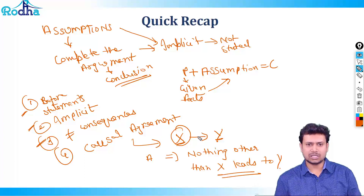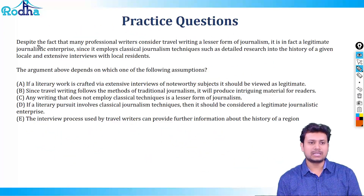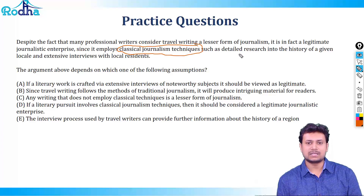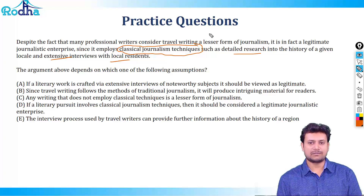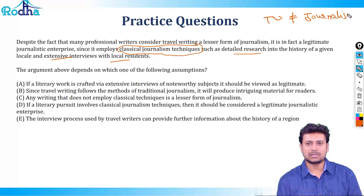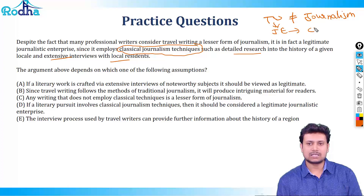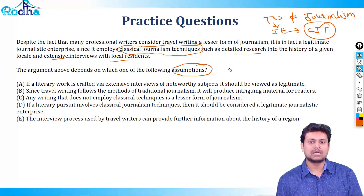Let's go to the questions. The first question says: despite the fact that many professional writers consider travel writing a lesser form of journalism, it is in fact a legitimate journalistic enterprise since it employs classical journalism techniques such as detailed research into history and extensive interviews with local residents. The argument says travel writing is not considered journalism, yet the author says it is actually a legitimate journalistic enterprise because it involves classical journalistic techniques.